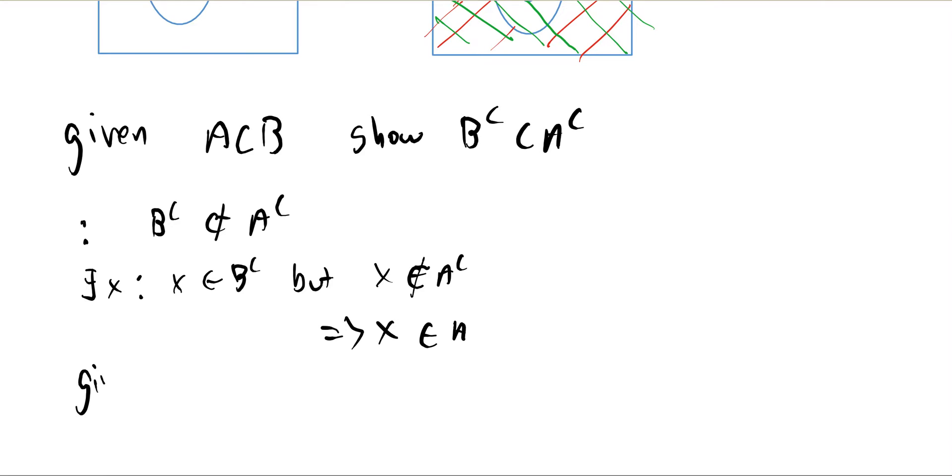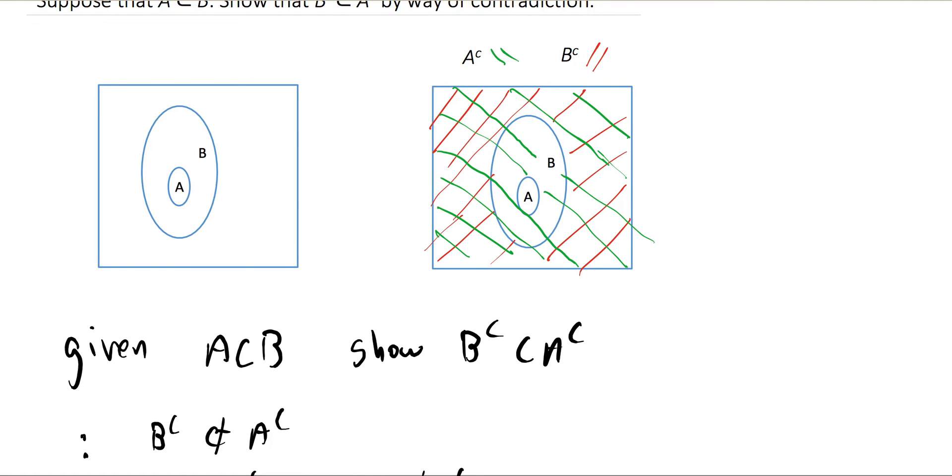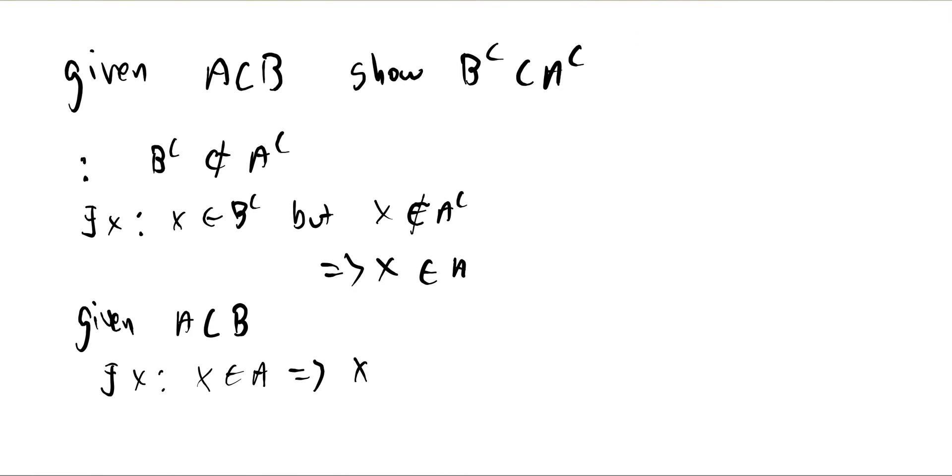But we were given A as a subset of B. So this means that there exists an X such that X is an element of A, and that implies, like our Venn diagram shows up here, if it is in A, then it is in B. So X is an element of A, so X is an element of B, but here is our contradiction.